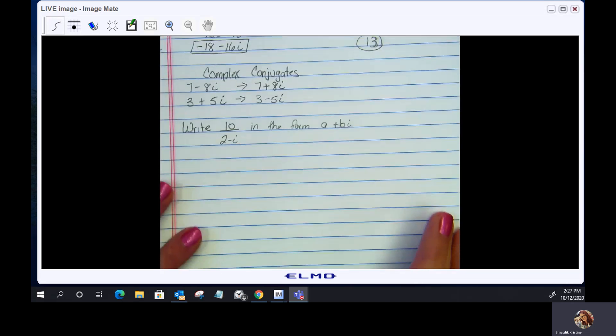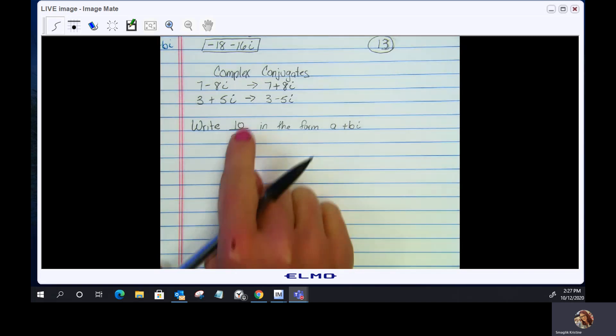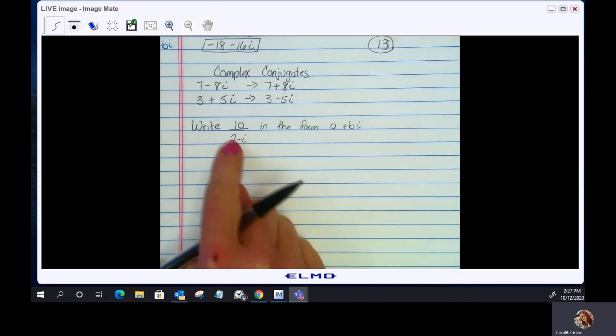When you are given something like 10 divided by 2 minus i, we don't ever want to see that imaginary number in the denominator. What we're going to do is multiply the fraction by the complex conjugate of the denominator.